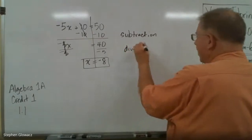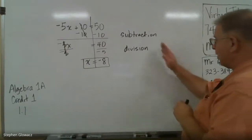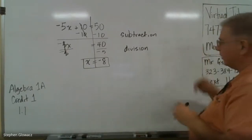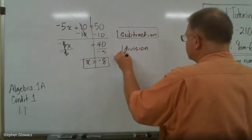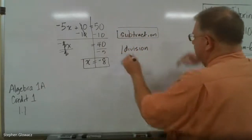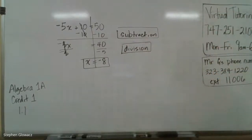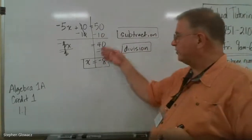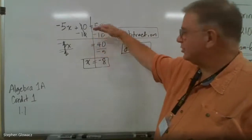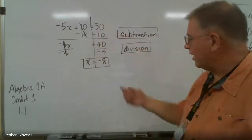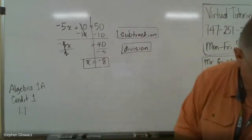The boxes for these are down below the problem, and again the words 'property of equality' are already written for you, so all you need to do is write in 'subtraction' for the first step and 'division' for the second step. And depending on when you're watching this, don't forget — if you have been trained and have access to CAMBI — that you should be showing your work as well, as opposed to just putting in the answers.